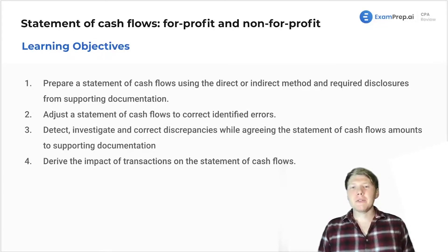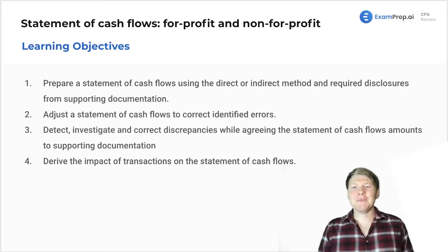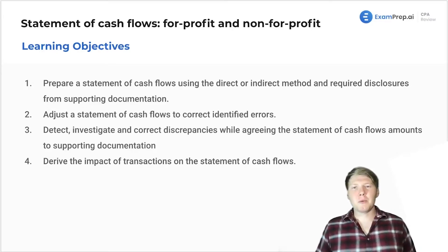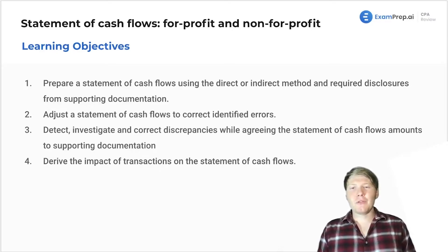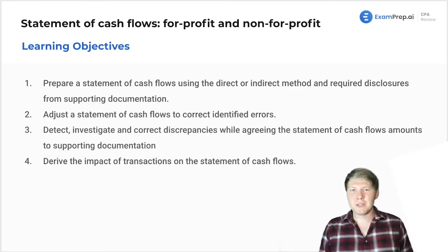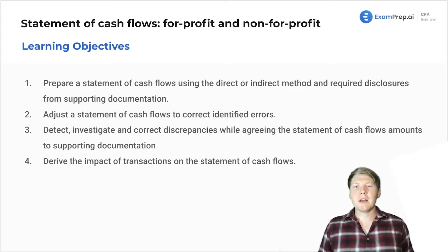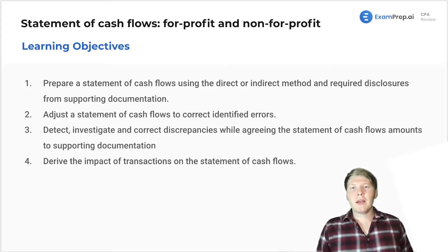First, prepare a statement of cash flows — you probably would do that in the statement of cash flows section — using the direct or indirect method and required disclosures from supporting documentation. They love saying 'from supporting documentation' over and over. However, the only time you'll really ever do that is in the SIMS. It's kind of more of a reference to the real world where you will need to take all of the client files, or your own files if you're internally preparing it, and prep a statement of cash flows for your company, for your firm, whatever it is.